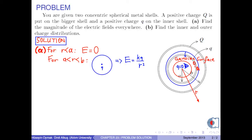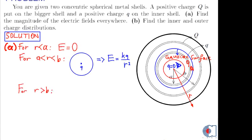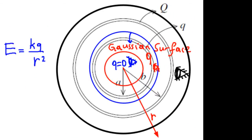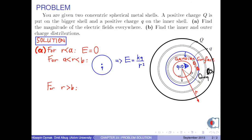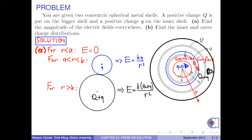Finally, for the region R is greater than B — that is outside the spherical shells — if we draw a Gaussian spherical surface enclosing this region and look inside, we see the total charge capital Q plus Q. According to the shell theorem, this charge can be considered as if it is concentrated in the center. Therefore, the electric field is calculated by the formula K times capital Q plus Q over R squared.